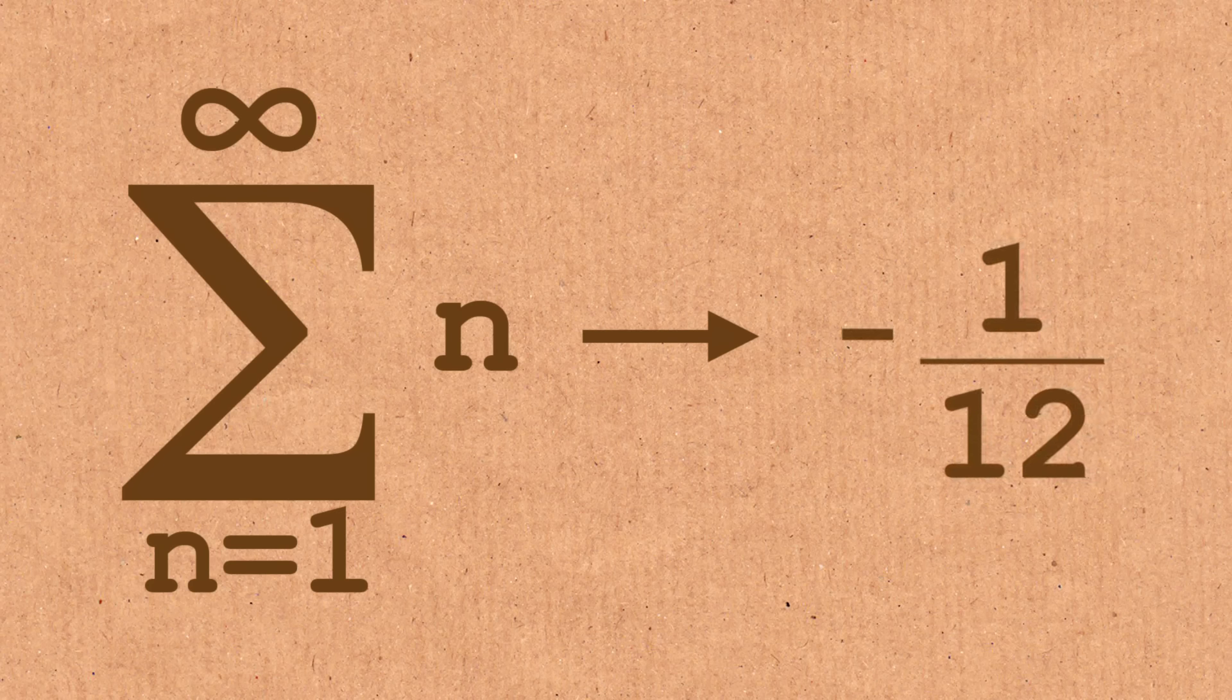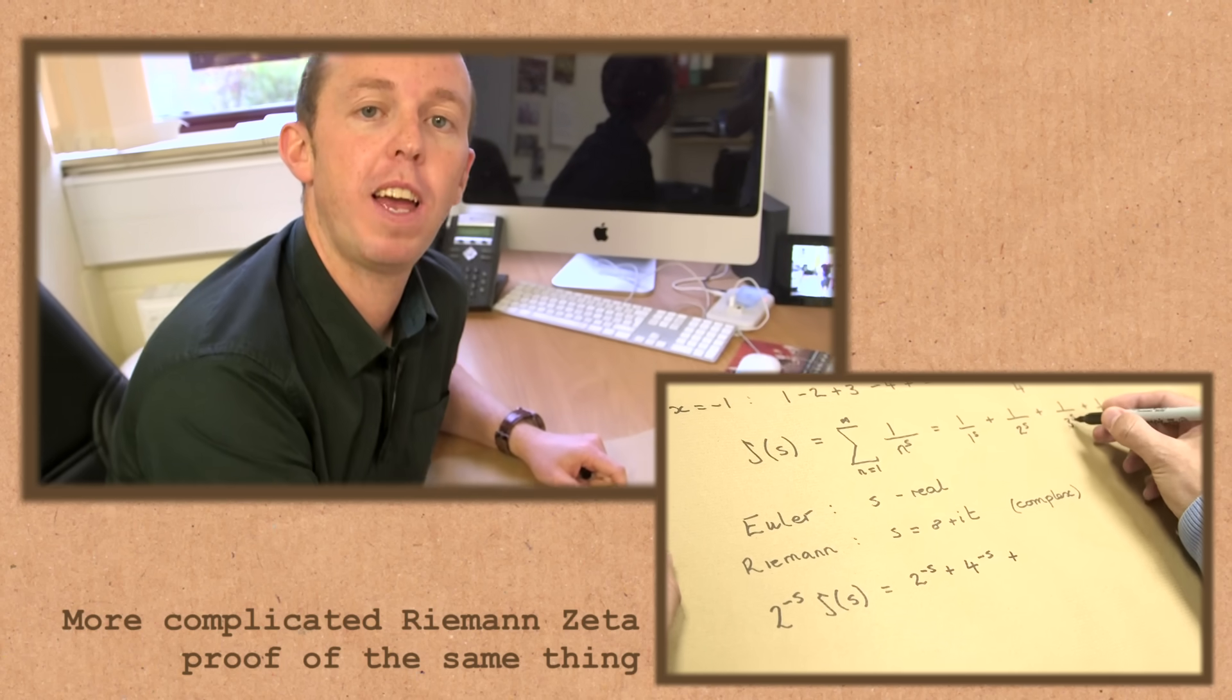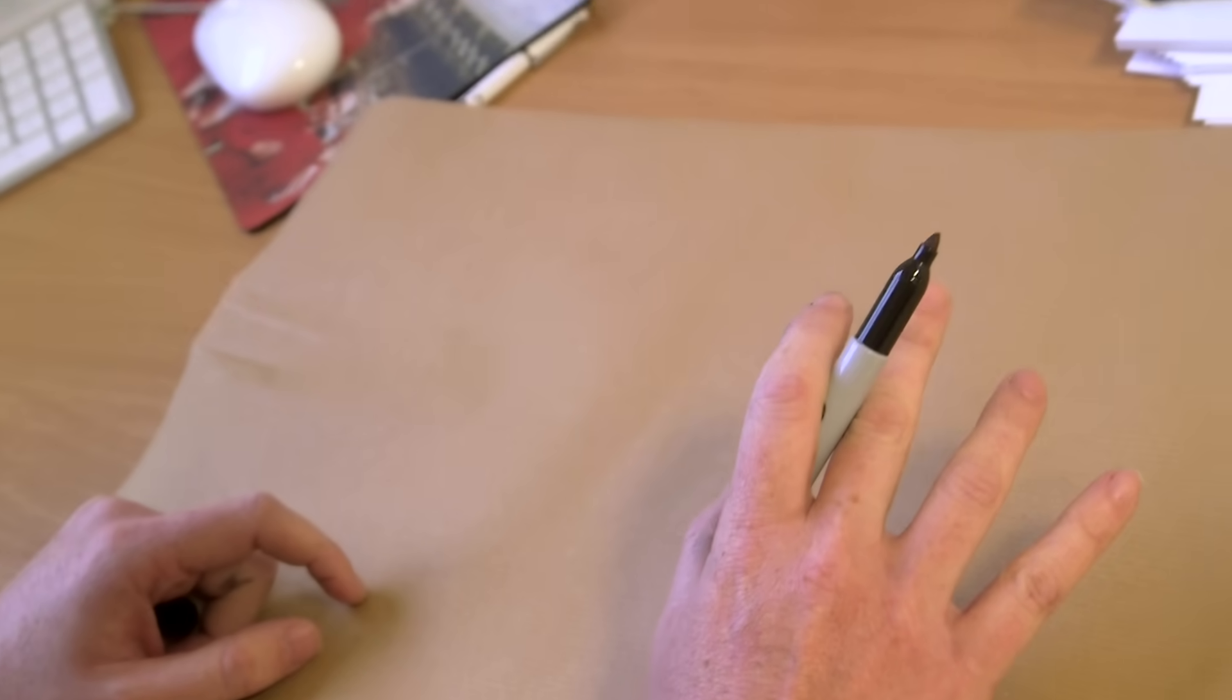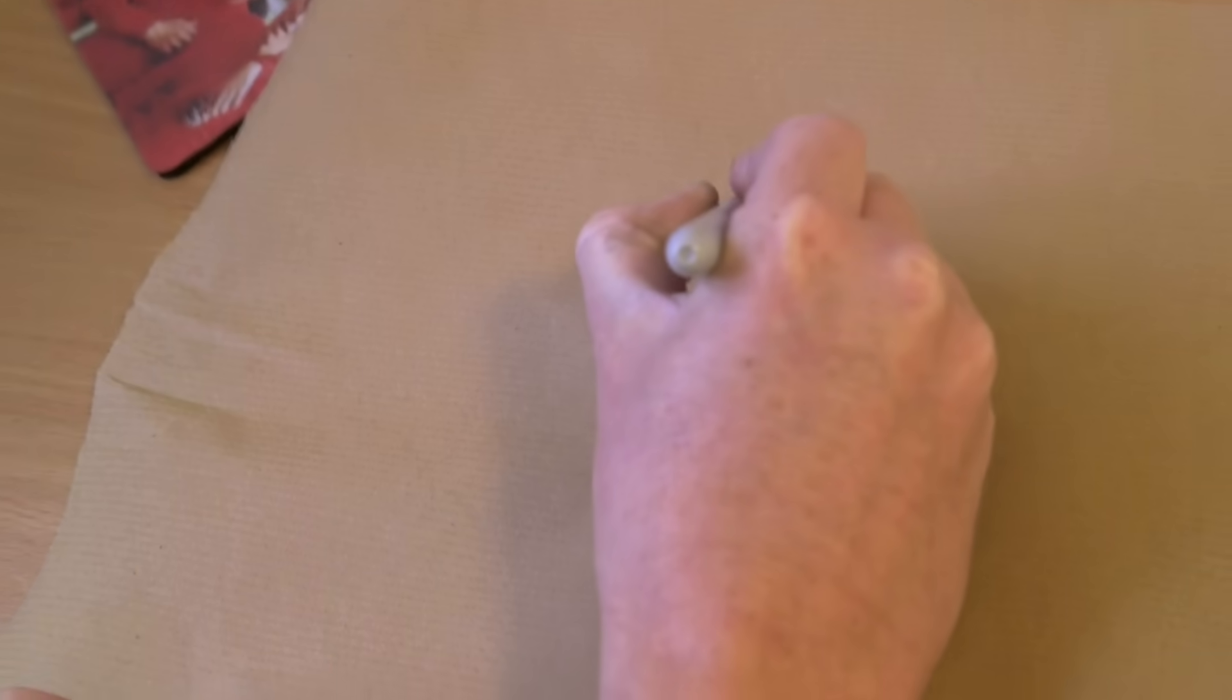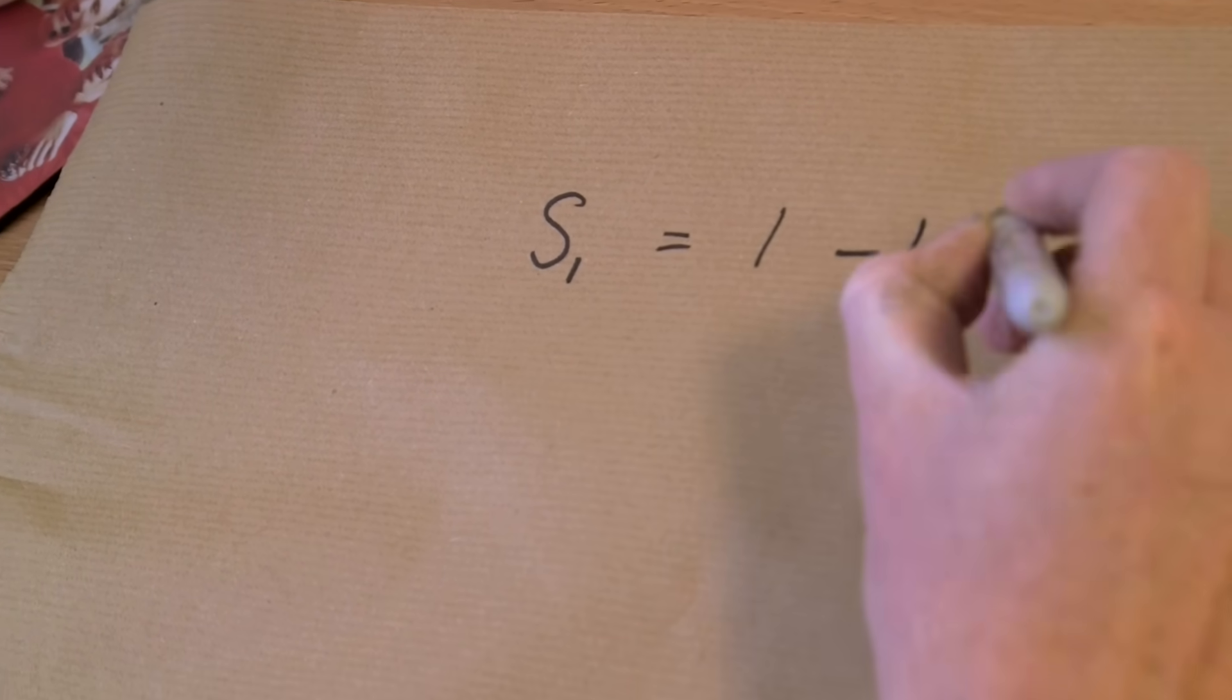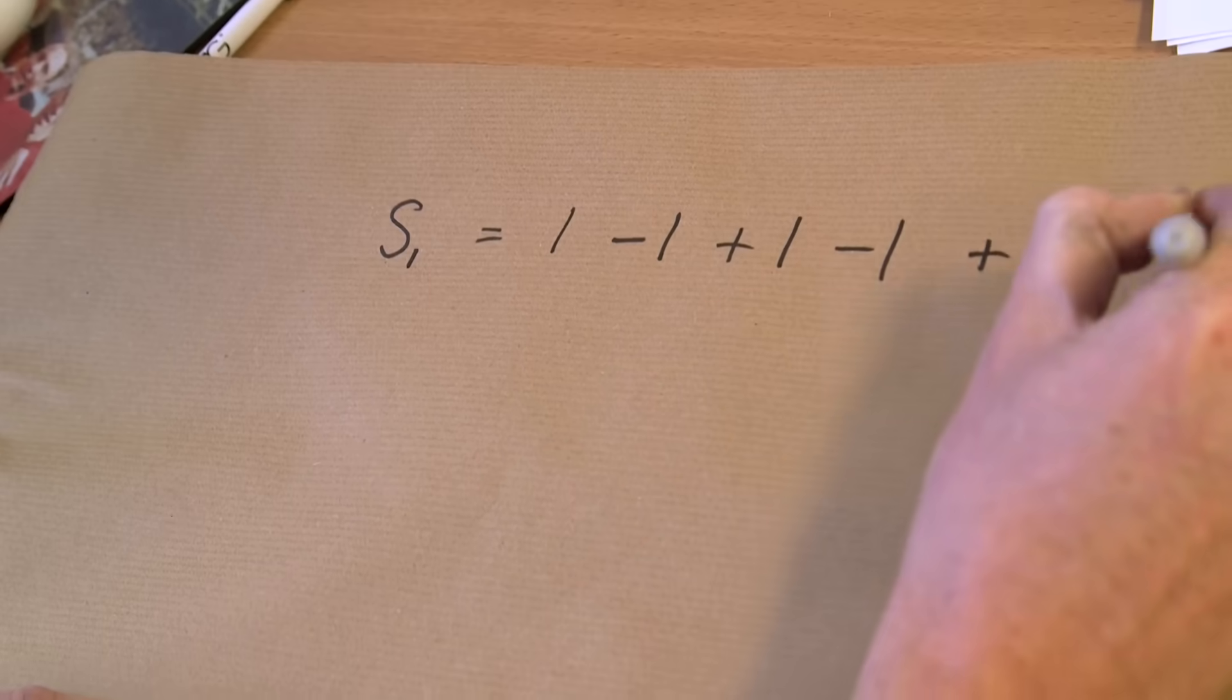All right, so we're going to prove now, without getting our knickers in a twist with Riemann zeta functions, we're going to prove in quite a simple way why the sum of all the natural numbers is, indeed, minus a twelfth. So to do that, we're going to do this in a number of steps. We're going to look at a few different sums. The first sum that I want to look at, I'm going to call it S1, and it's 1 minus 1 plus 1 minus 1 plus 1 minus 1 and so on.